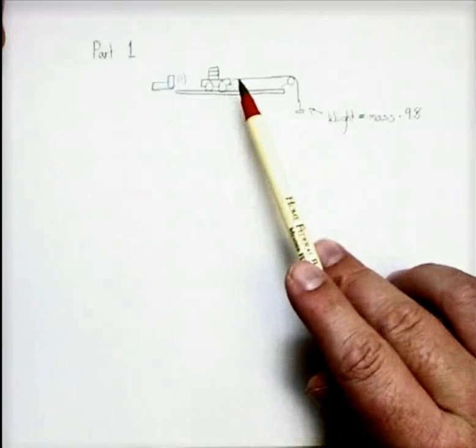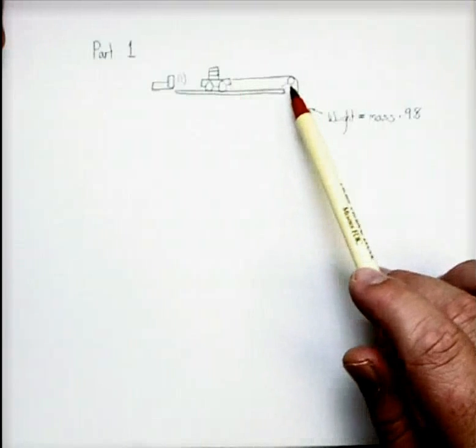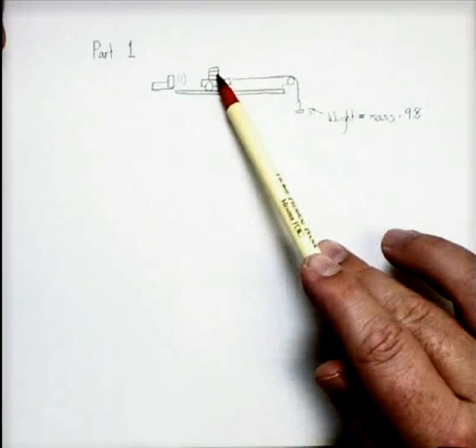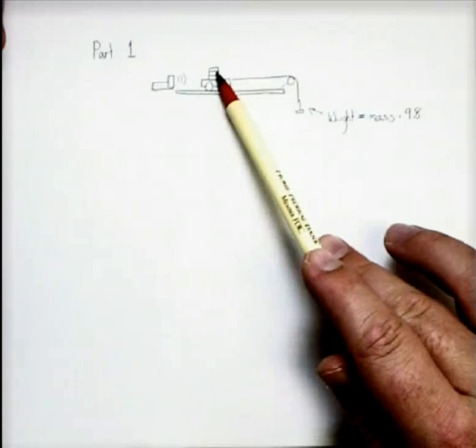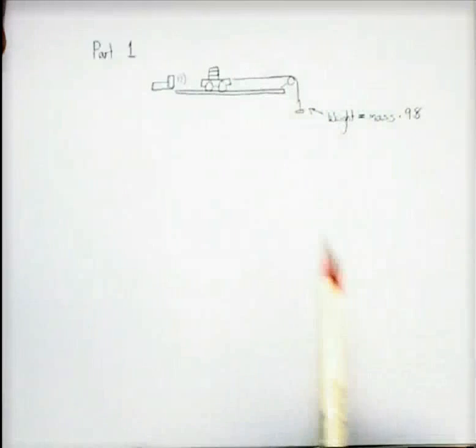So we're controlling the weight on this and we're looking to see what that does to the acceleration. Now one thing to note that's important is that we're keeping the mass of this entire system constant. We are never going to remove any of these slotted masses. We will move them from the cart to the weight hanger, but we will never just take one off completely.